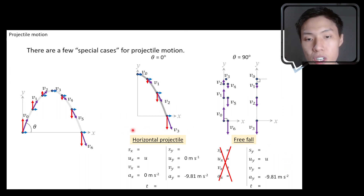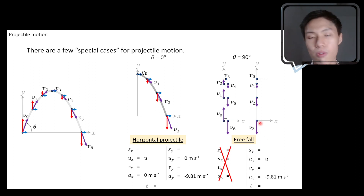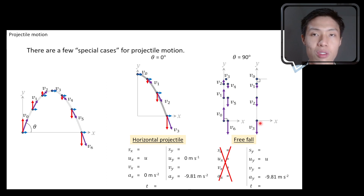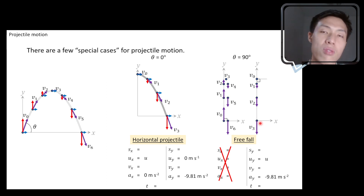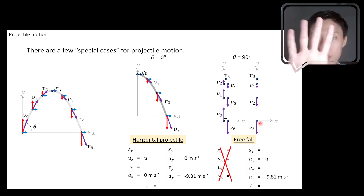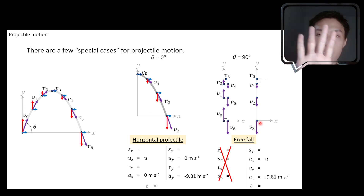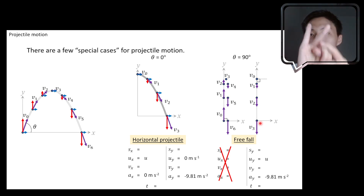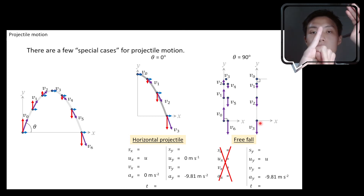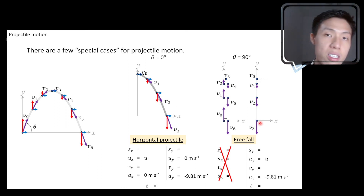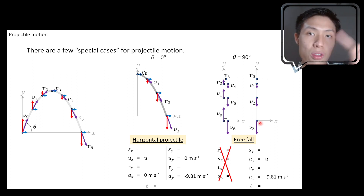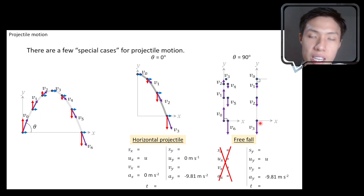So those are the two special cases: the horizontal projectile and free-fall motion. Don't worry too much about it — any kind of projectile motion, whether special cases or not, you solve using the same strategy: five steps — visualize, identify initial and final position, set up your SUVAT table, get your equations, then substitute and get the answer. We are going to apply these five steps to a few questions in the next video.